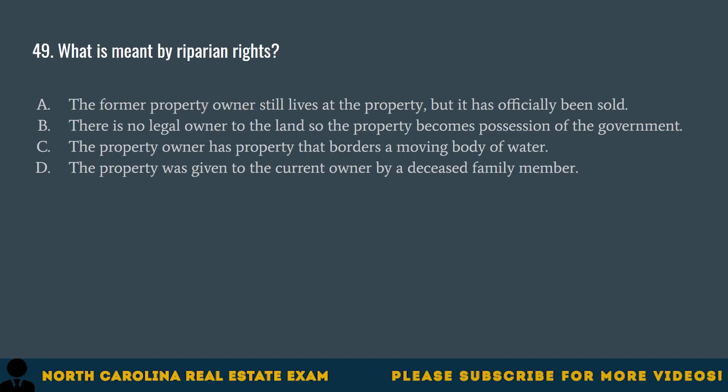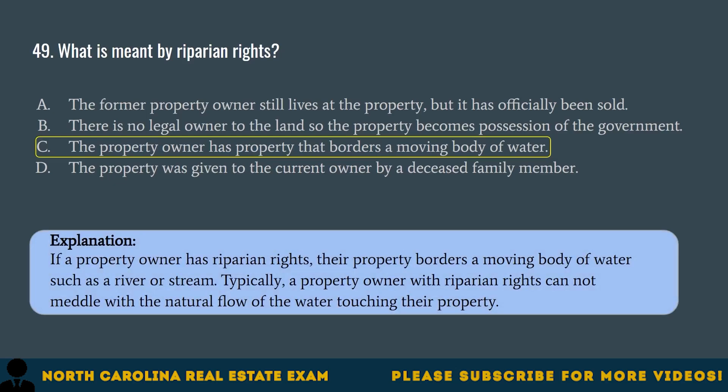Question 49. What is meant by riparian rights? A. The former property owner still lives at the property but it has officially been sold. B. There is no legal owner to the land so the property becomes possession of the government. C. The property owner has property that borders a moving body of water. D. The property was given to the current owner by a deceased family member. The correct answer is C. The property owner has property that borders a moving body of water. If a property owner has riparian rights, their property borders a moving body of water such as a river or stream. Typically, a property owner with riparian rights cannot meddle with the natural flow of the water touching their property.